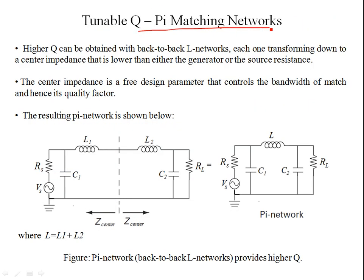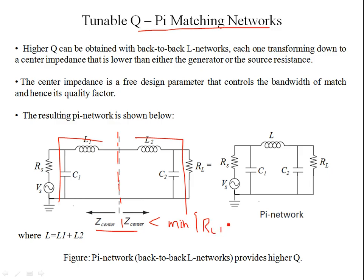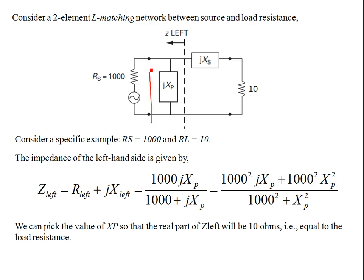Recall from the tunable pi matching network video — if you haven't seen it, check the links in the description. In pi networks, back-to-back L networks are used, and the center impedance Zcenter must be chosen such that Zcenter is less than the minimum of the load or source impedance. For example, if the load is 10 ohms matched to 1000 ohms, you'd select Zcenter around five or one ohm.